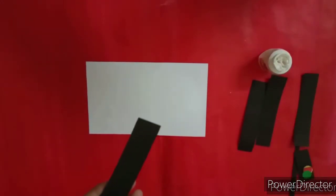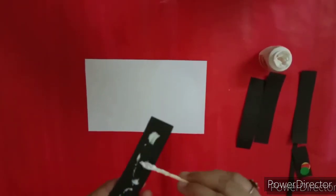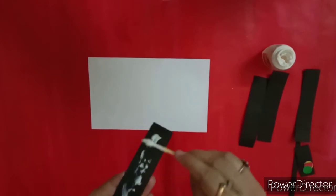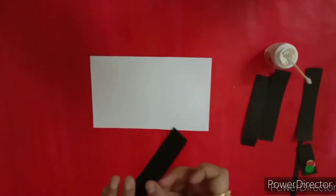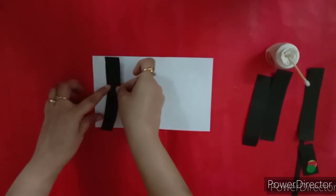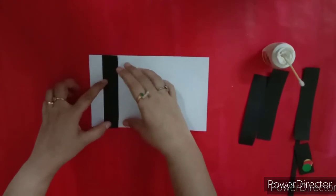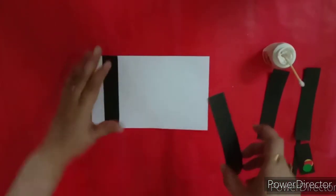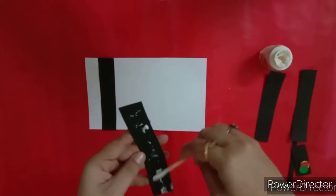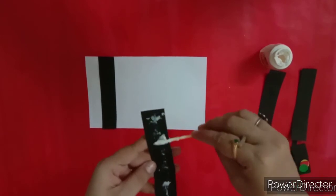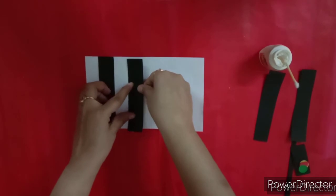Take black strips one by one and apply the glue on it and stick it on the white paper like this. Then, another black strip. Apply the glue again and at a distance.